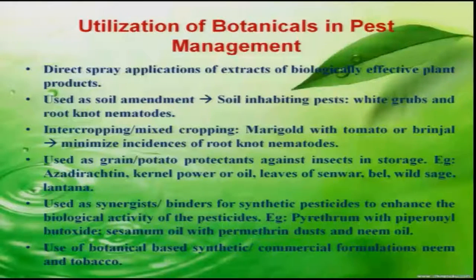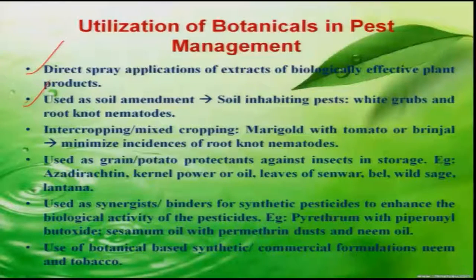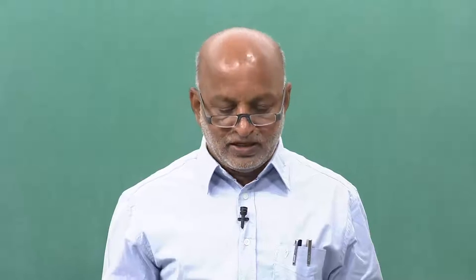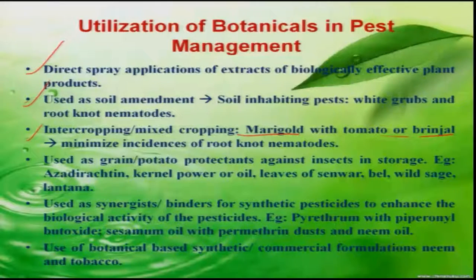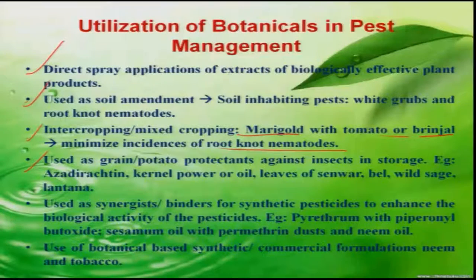How best can one use these botanicals in pest management? One method is direct spraying. Another is soil amendment, which inhibits soil-inhabiting insects and also improves soil structure. Some botanicals can be used in intercropping systems, such as marigold intercropped with tomato or brinjal for management of root-knot nematodes. Botanicals are also used in stored grain pest management, and some act as synergists to enhance the activity of other insecticides.